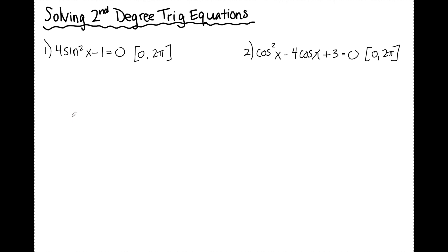Hi everyone, today we're going to be looking at solving second degree trig equations. In the first one, I have 4 sine squared x minus 1 is equal to 0. If I only have the variable appearing once in my equation, I can just follow my regular steps for solving for a variable — isolate the variable and then use my trig knowledge to solve.